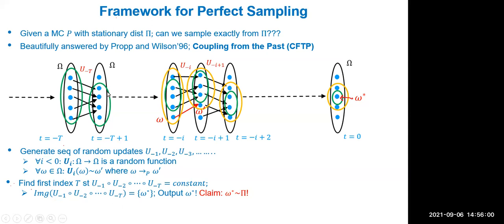You apply U_{-T} to the whole domain, look at the range, then apply U_{-T+1} to the resulting set, and continue until time minus i. From minus i onward, you reuse the previously sampled randomness. As seen in the example, the image shrinks — the green bag in the second pass is a subset of what was seen in the first pass. Once you obtain a singleton, you output it. The claim is this singleton is distributed exactly according to the stationary distribution of the Markov chain.